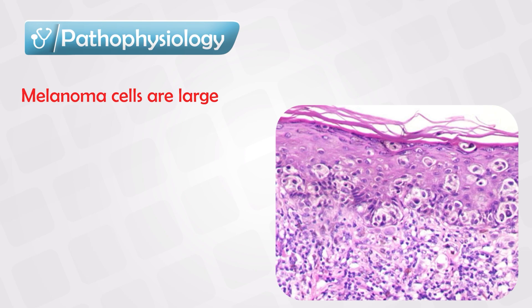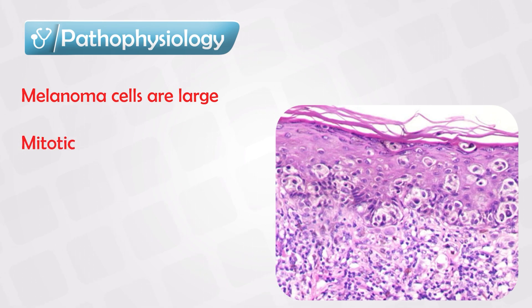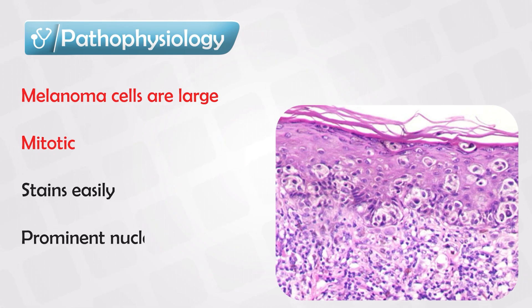Comparing the melanoma cells to normal melanocytes, the melanoma cells are much bigger and have significantly more mitotic activity. They also have a more reactive cytoplasm and prominent nuclei. These dysplastic and extreme features are not seen in normal melanocytes — only in the melanoma cells.